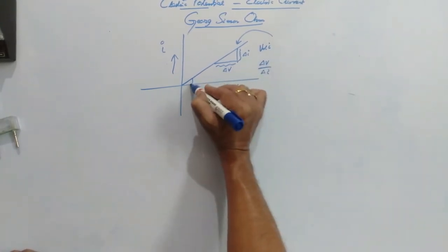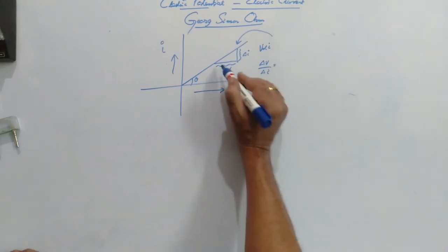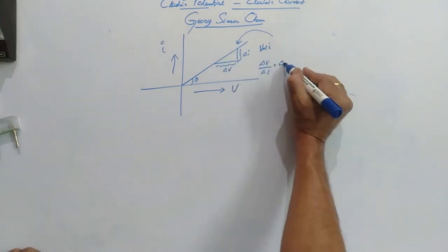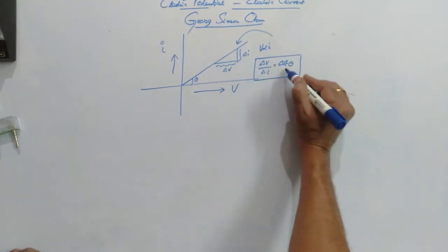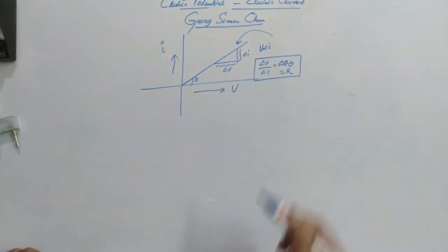Here, if you consider that this is theta, it would be base by perpendicular. Therefore, cot theta. This gives us the value of resistance.